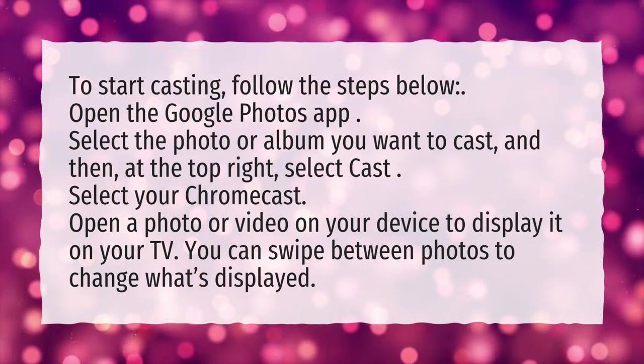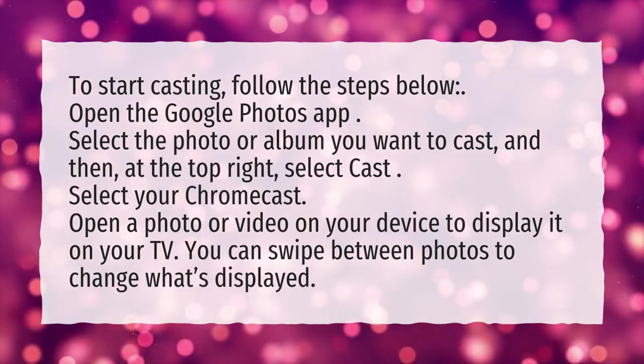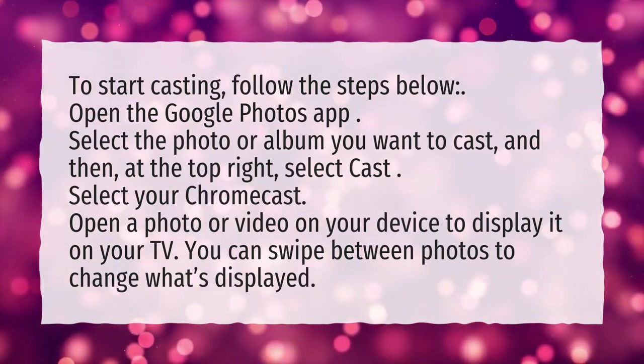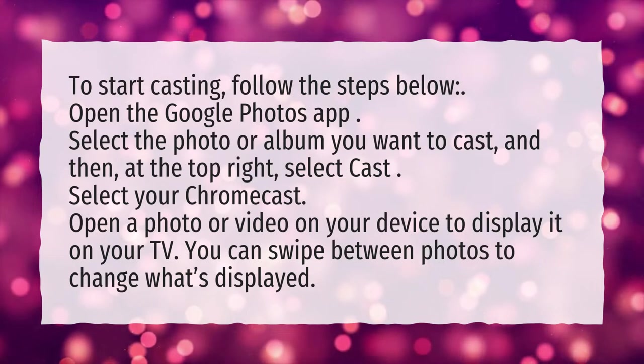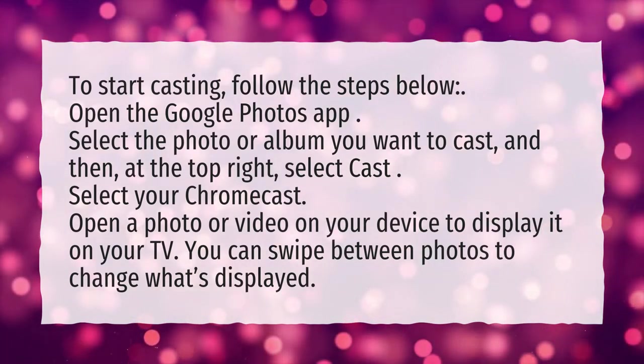Select your Chromecast. Open a photo or video on your device to display it on your TV. You can swipe between photos to change what's displayed.